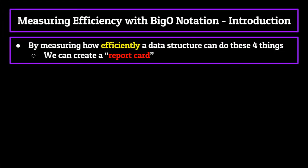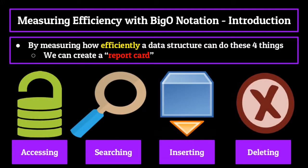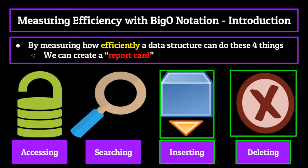By measuring how efficiently a certain data structure can do these four things, we can basically create a report card of sorts, which measures how efficient a certain data structure is. This gives us a pretty good overview of what a certain data structure is good at and what it is bad at. If we need to store data that is easily accessible to the end user, we might choose a data structure which can access elements the quickest. Vice versa, if accessing elements isn't the most important thing, but we need a data structure which can be easily added to and deleted from, we would go for one which is most efficient in that specific functionality.